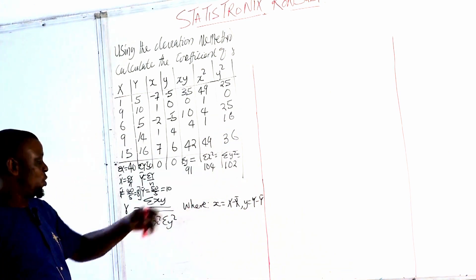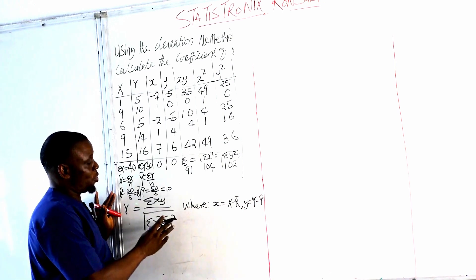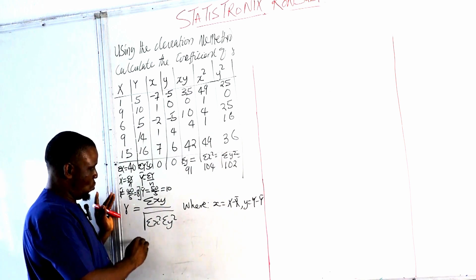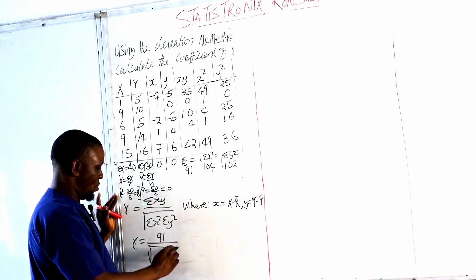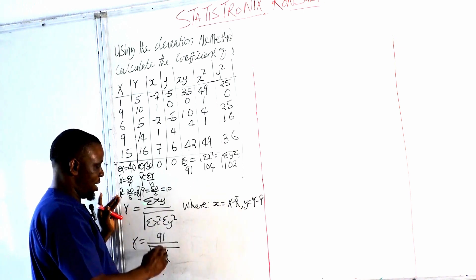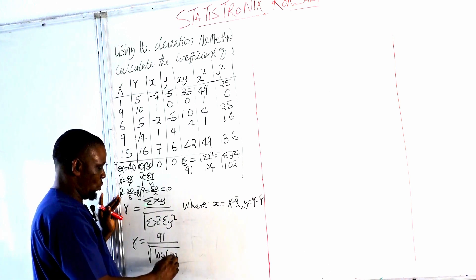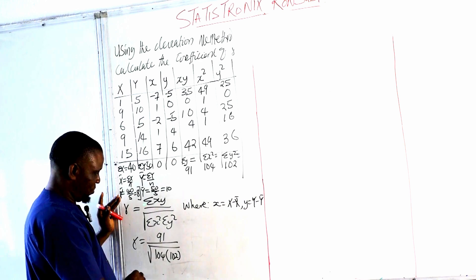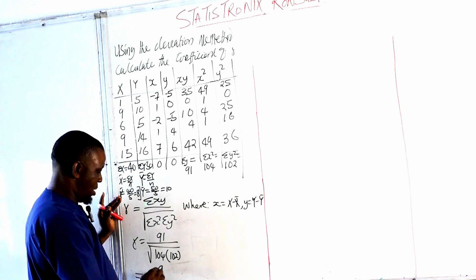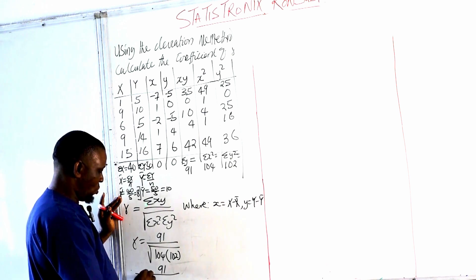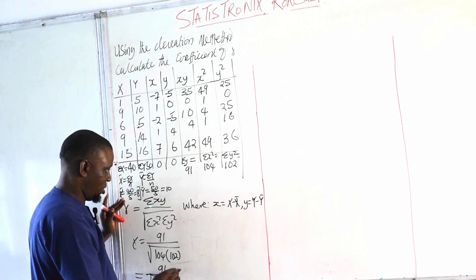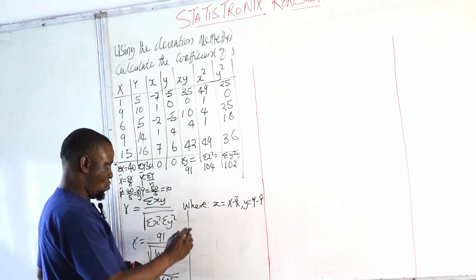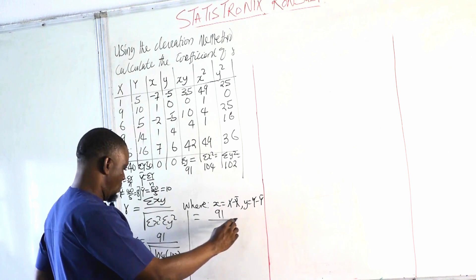Now we've gotten the values from the table, so we're going to substitute all these values in the formula. So our r will be equal to sum of XY is equal to 91 over the square root of, now the sum of X² is 104, and the sum of Y² is 102. So this is going to give us 91 over the square root of 104 times 102, which is 10,608.